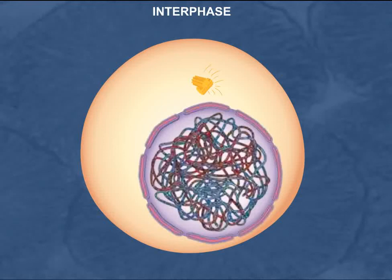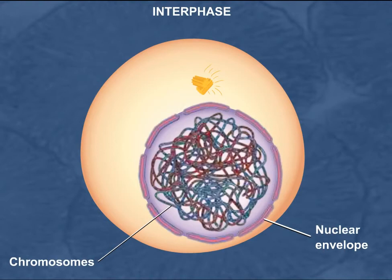During interphase of the cell cycle, the genetic material of the cell is found in the form of chromatin and located within the nucleus of the cell, which is surrounded by the nuclear envelope. During the S stage of interphase, DNA replication takes place, and thus the cell leaving interphase and entering mitosis already has replicated its genetic information. Interphase cells that are about to divide also replicate their centrosomes.